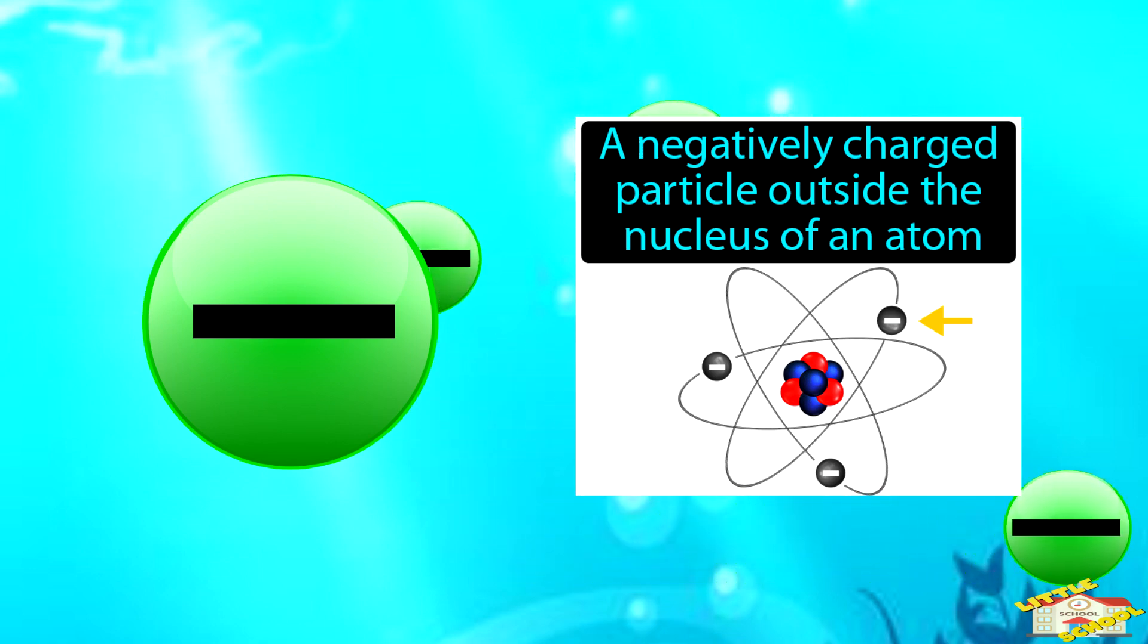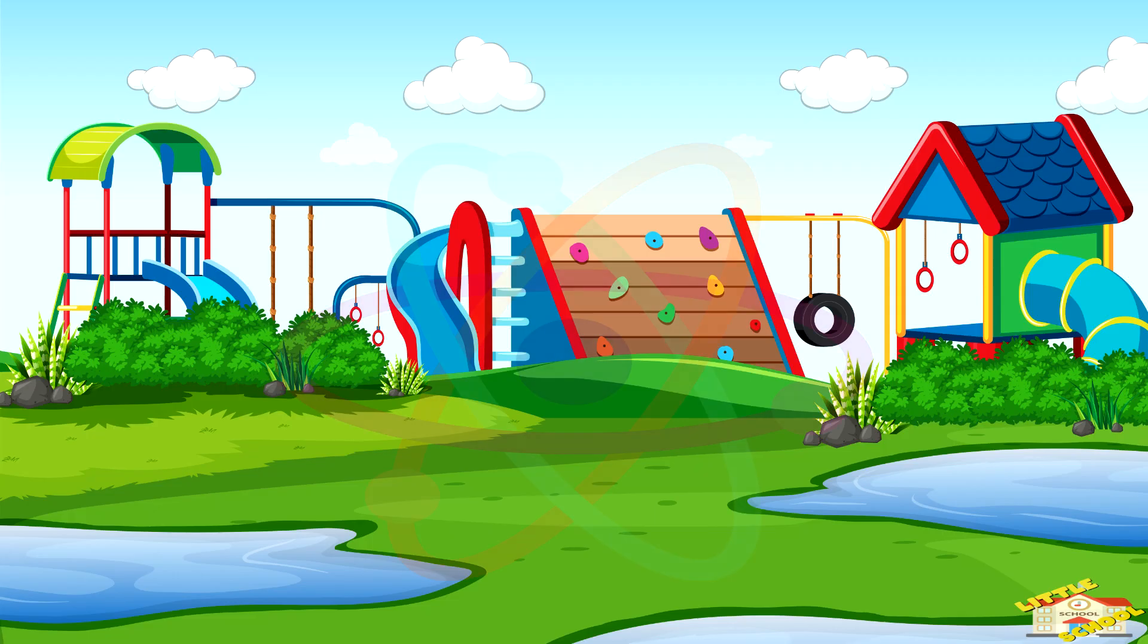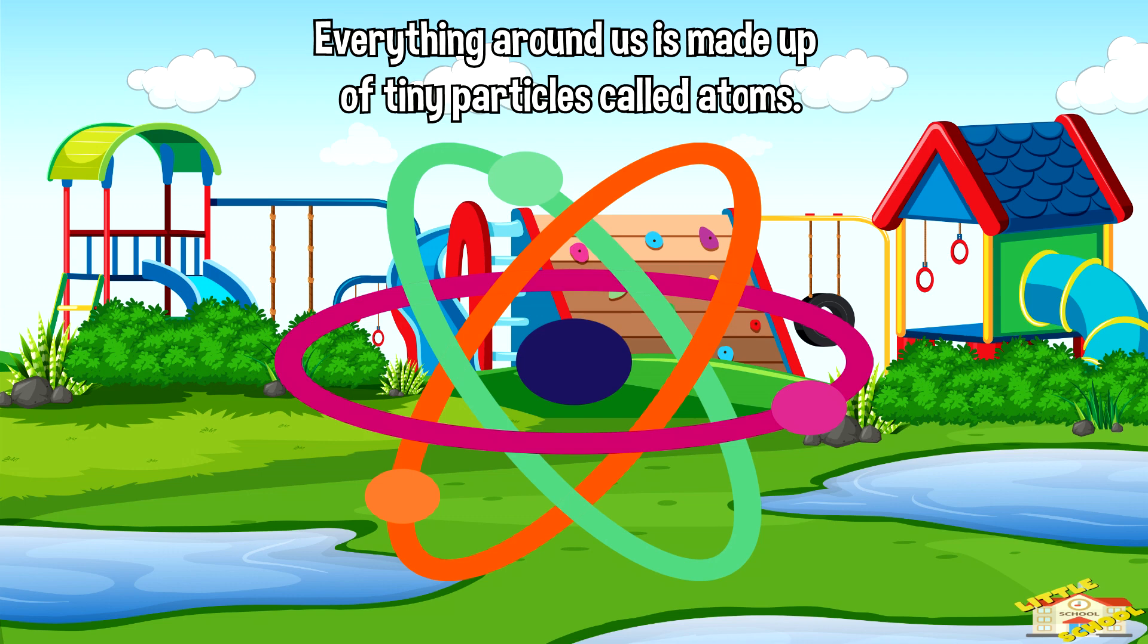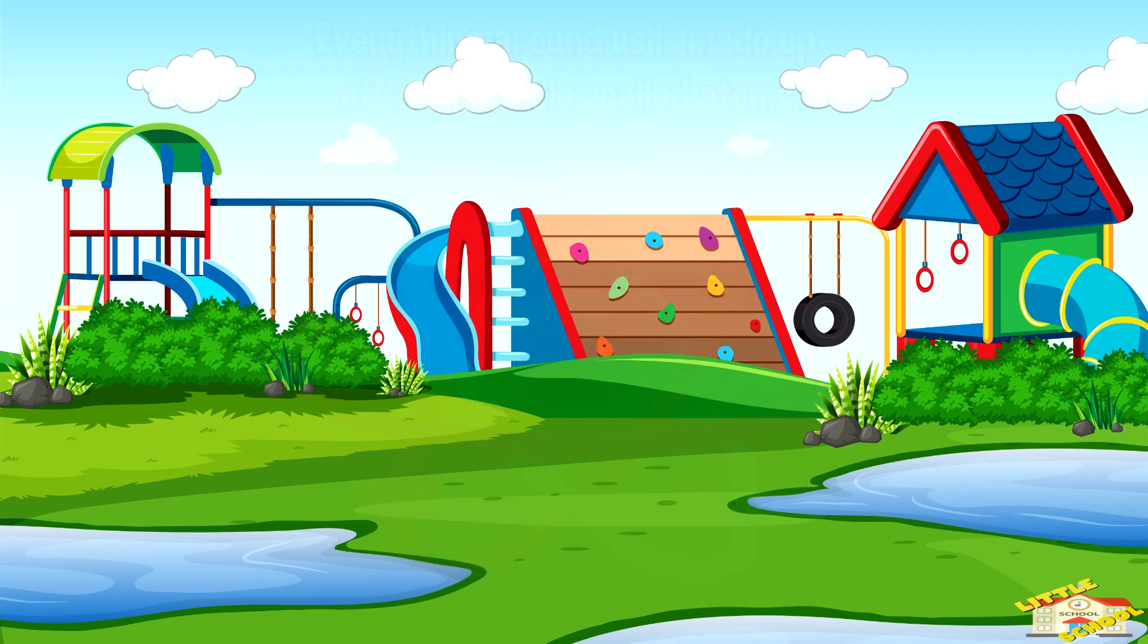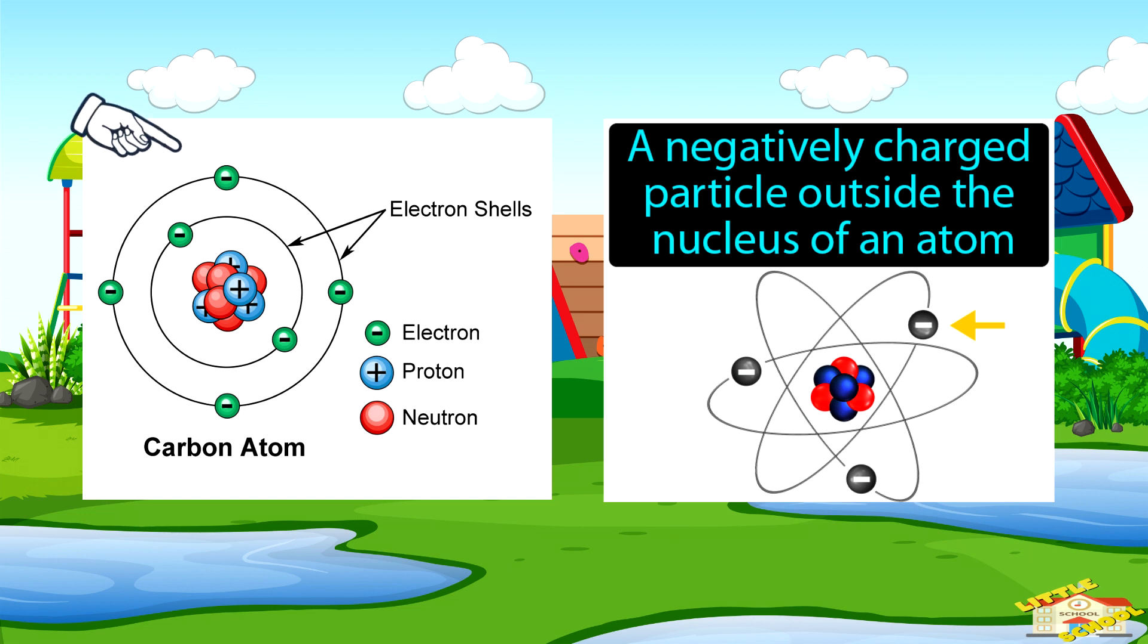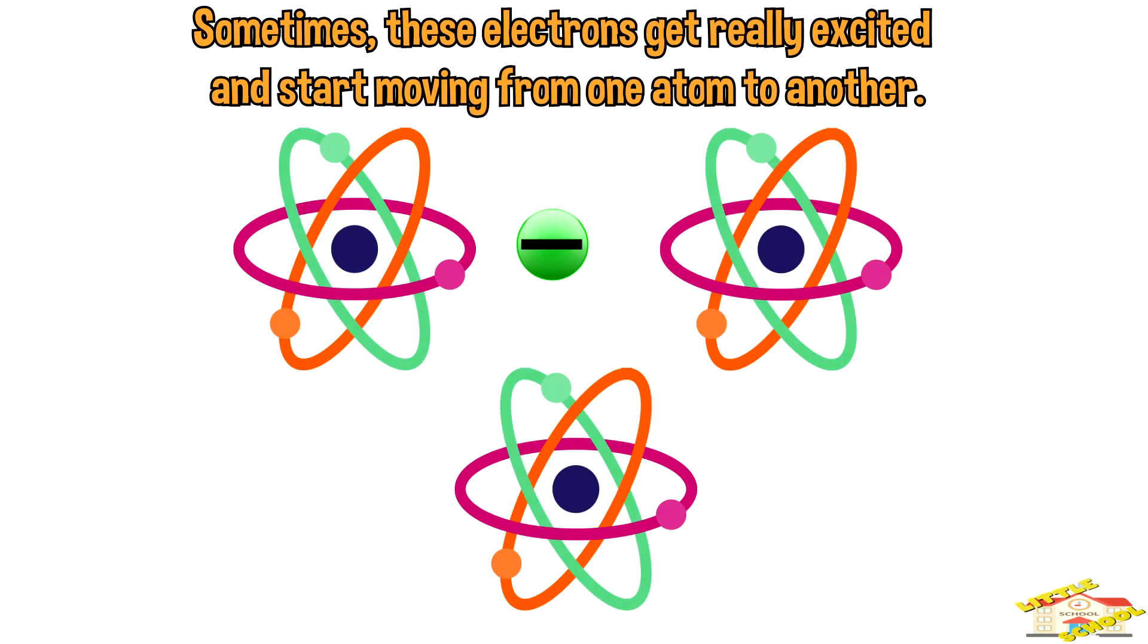Everything around us is made up of tiny particles called atoms. Atoms have even smaller parts inside of them, and one of these parts is the electron. Sometimes these electrons get really excited and start moving from one atom to another.